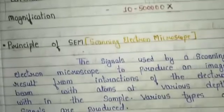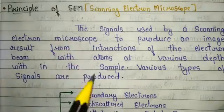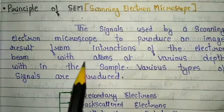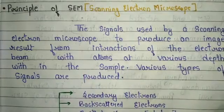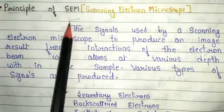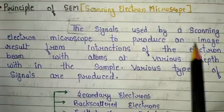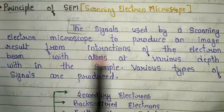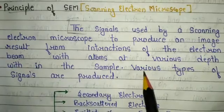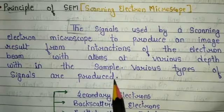The principle is very important for semester exams and competition exams, as well as for MSc second semester examinations. The principle of the scanning electron microscope states that the signals used by SEM to produce an image result from the interaction of the electron beam with atoms at various depths within the sample, and various types of signals are produced.